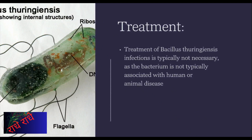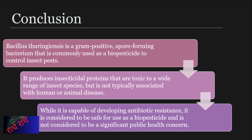B. thuringiensis is a type of bacteria commonly found in soil that can be beneficial in certain instances. It produces proteins that are toxic to certain insects and is used in many organic products to provide pest control. It is not usually known to cause human or animal disease, so typically does not require treatment. B. thuringiensis is an effective and safe alternative as a biopesticide. Its insecticidal proteins are toxic to a wide range of insects, yet it is not typically associated with human or animal disease and is not considered to be a significant public health concern. This method of pest control has many advantages and offers an alternative to traditional chemical pesticides.